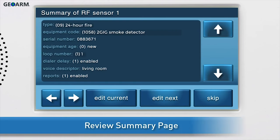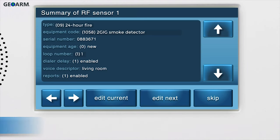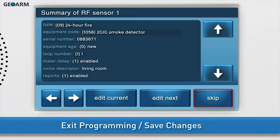Review the Summary page to ensure all information is correct. Review all answers. If you need to edit any of the information, press Edit Current. To exit programming mode and save your changes, press Skip.